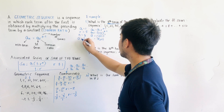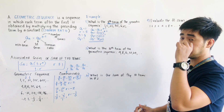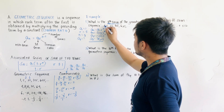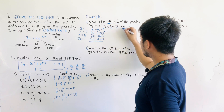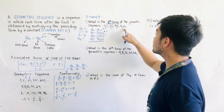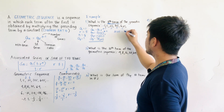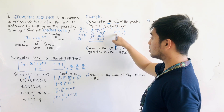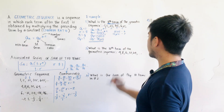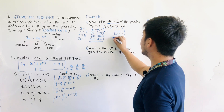That is the 8th term: 78,125. Let us verify: the given terms are 1 (1st), 5 (2nd), 25 (3rd), 125 (4th), 625 (5th). The 6th term is 625 times 5 equals 3,125. The 7th term is 3,125 times 5 equals 15,625. The 8th term is 15,625 times 5 equals 78,125 — the same answer.